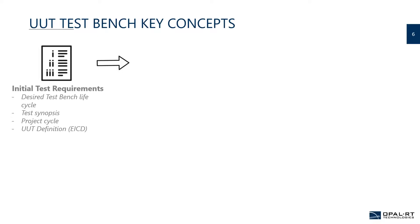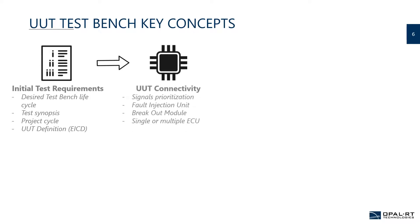The story we propose today walks you through how to design a test bench. The first step is defining your requirements — understanding the bench lifecycle and what tests you want to achieve, as a test synopsis. We also share information about the project cycle and common approaches seen across customers. Then comes the UUT definition and the EICD — the electrical interface control document — which is the starting point for the design, defining how to connect the UUT.